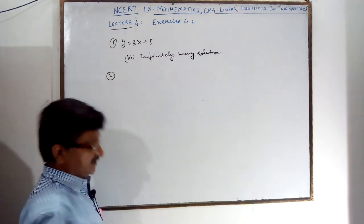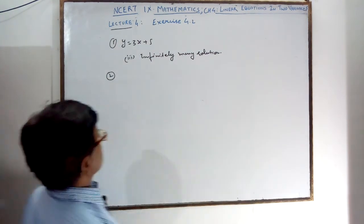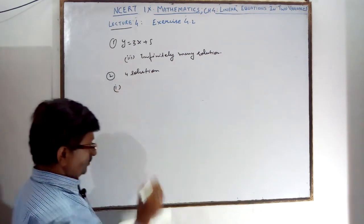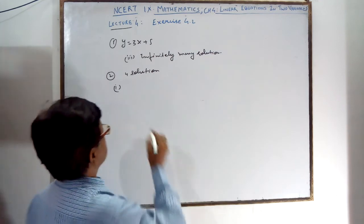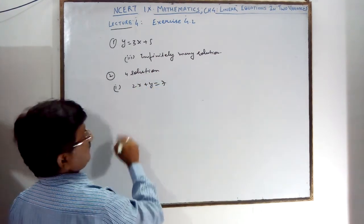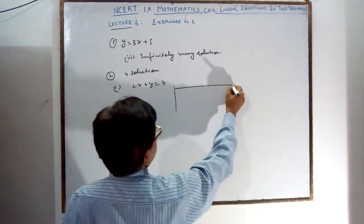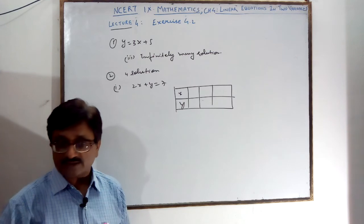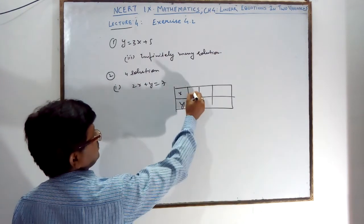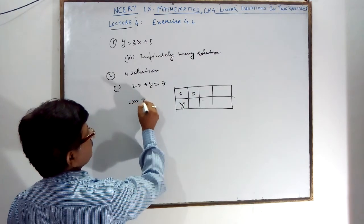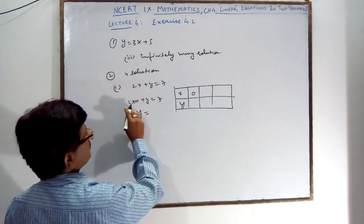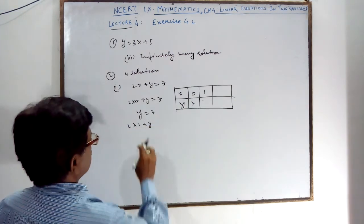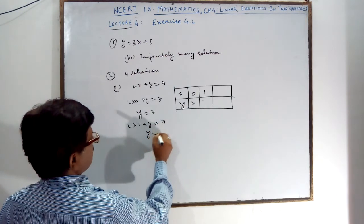Question number 2: write 4 solutions for each of the following. The first one is 2x + y = 7. You write down all the values of x and y. When x = 0: 2(0) + y = 7, so y = 7. When x = 1: 2(1) + y = 7, so y = 7 minus 2 = 5.